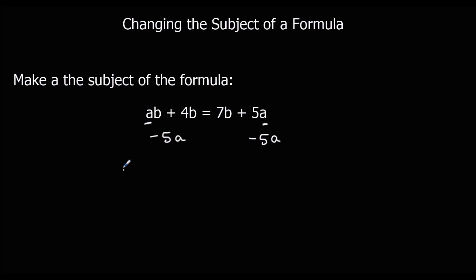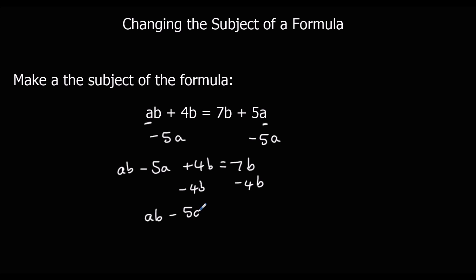That leaves me with AB minus 5A plus 4B equals 7B. Taking away 4B — I've got the A's on the same side and everything else has to go to the other side. So I'm going to take away 4B. That gives me AB minus 5A equals 7B take away 4B, which we can write as 3B. So I've got the A's on the same side and everything else on the other side. I don't want A appearing twice, so I'm going to factorize and take it out.